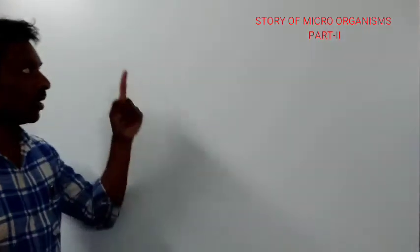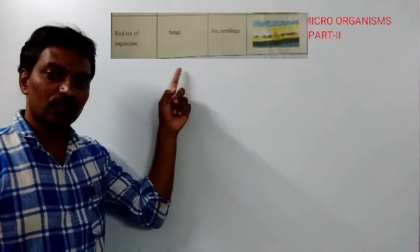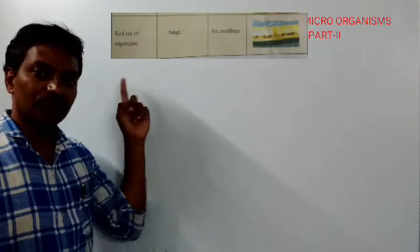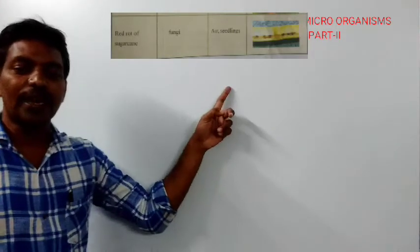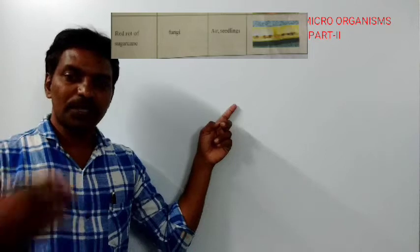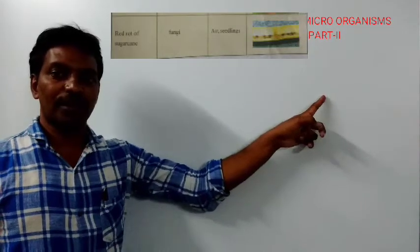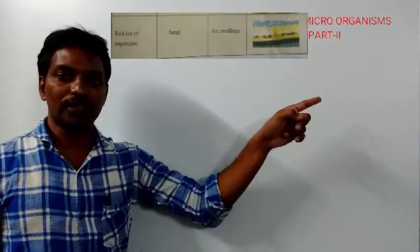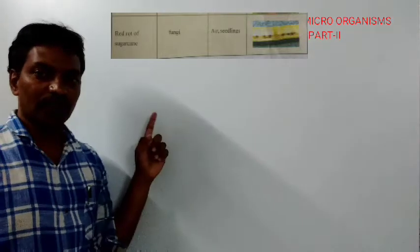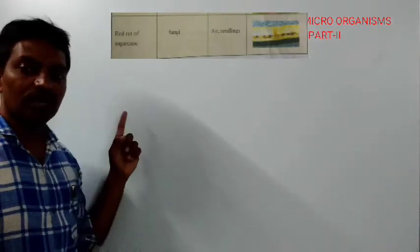The next one we are going to discuss is Red Rot of Sugarcane. The causative micro-organism is fungi. The mode of transmission is air and cuttings — the pieces of sugarcane used to grow new plants can get the fungus and develop red rot. You can see red-colored dots in the sugarcane in the figure. That is called Red Rot of Sugarcane.